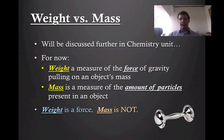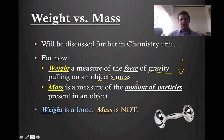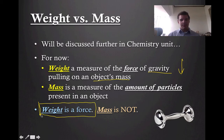So when we think about this idea of weight, we're going to talk about weight versus mass a little bit more in the chemistry unit. But for now, we're going to say that weight is simply a measure of the force of gravity pulling on an object's mass. So the weight of an object is gravity pulling that object down towards the ground. Mass is a little bit different — it's just measuring how many particles are present in an object, so it's just an amount of something. It's not an actual force at all. So weight is actually a force; mass is not.